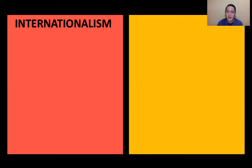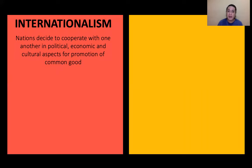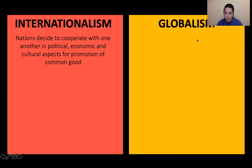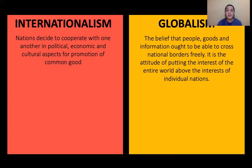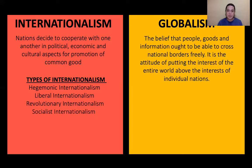In the global interstate system, it's better to understand the difference between internationalism and globalism. Internationalism is when nations decide to cooperate with one another in political, economic, and cultural aspects for the promotion of the common good. Globalism is the belief that people, goods, and information ought to be able to cross national borders freely — it is the attitude of putting the interest of the entire world above the interest of individual nations. There are four types of internationalism: hegemonic, liberal, revolutionary, and socialist internationalism.